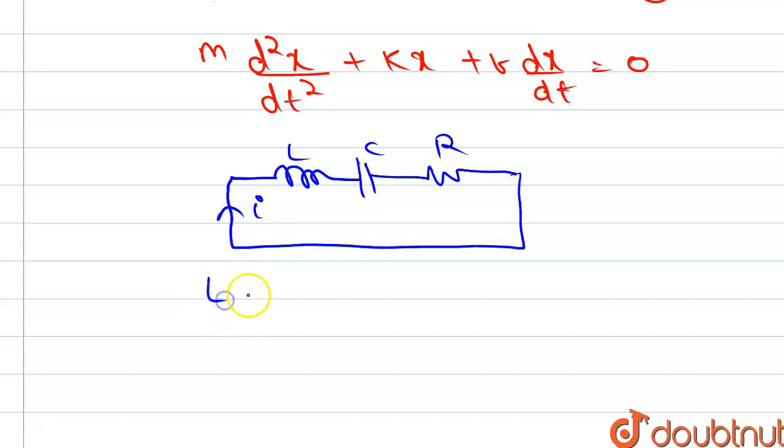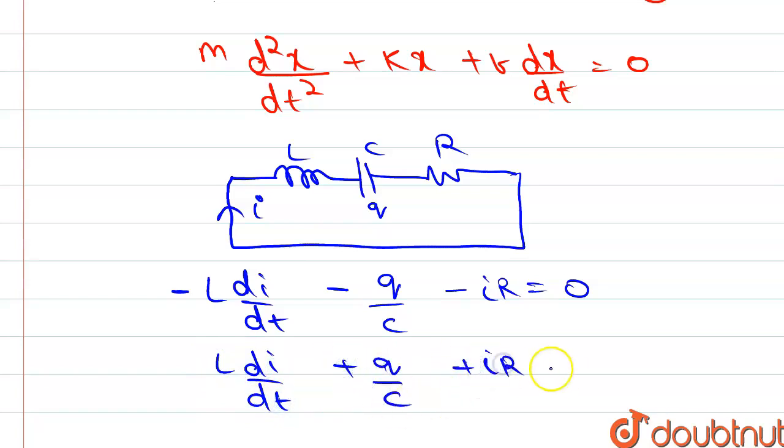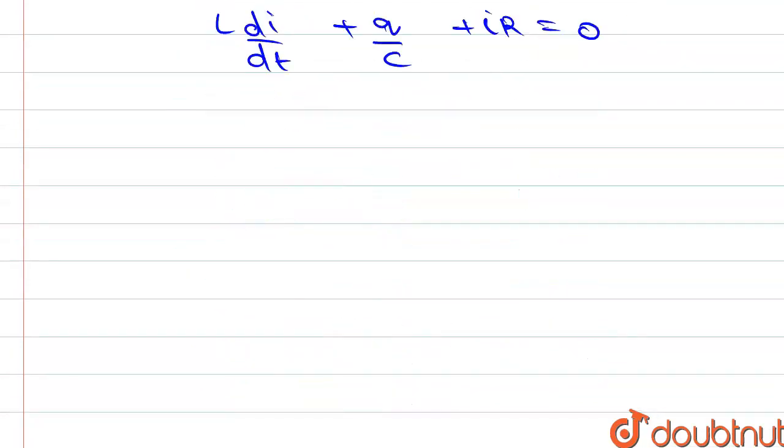So we can write the equation: the potential difference across the inductor is minus L di/dt, and the potential difference across the capacitor, assuming the charge stored is q, is q/c, and the potential difference across the resistor is iR. So L di/dt plus q/c plus iR equals zero. Current i is equal to charge per unit time, that is dq/dt.